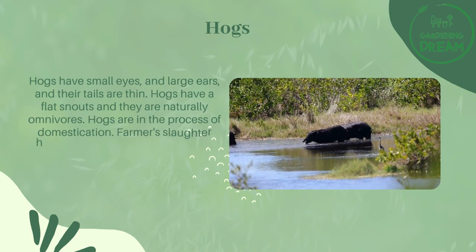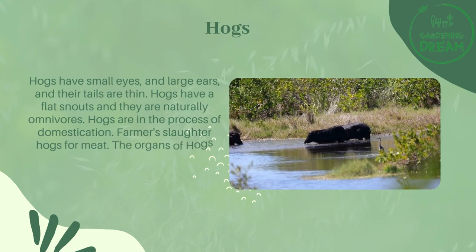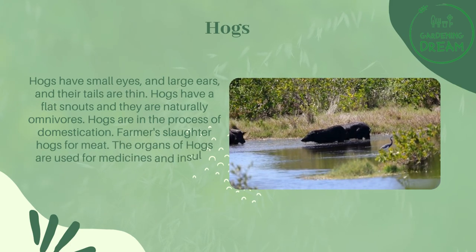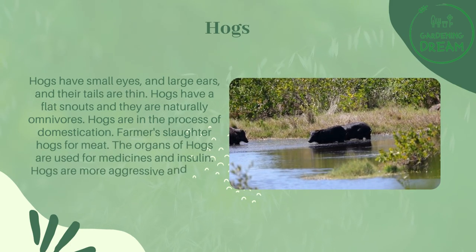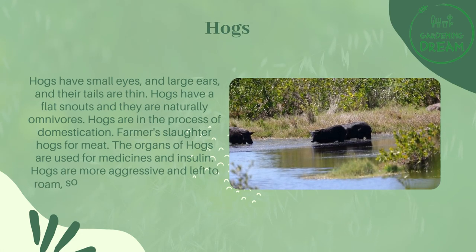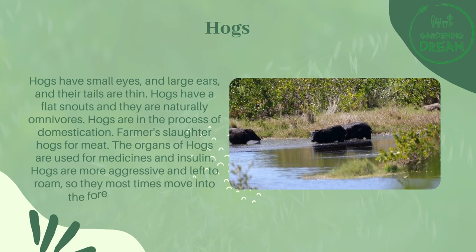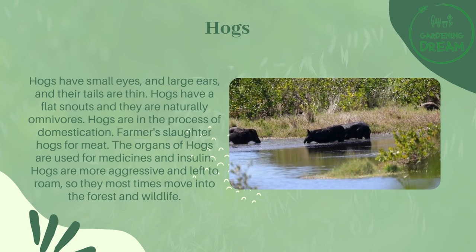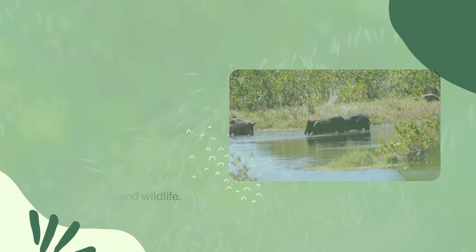Hogs are in the process of domestication. Farmers slaughter hogs for meat, and the organs of hogs are used for medicines and insulin. Hogs are more aggressive and left to roam, so they most times move into forests and wildlife areas.